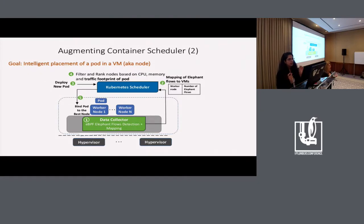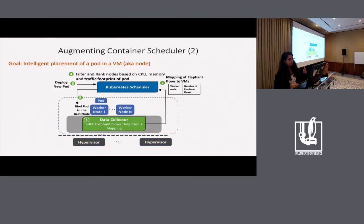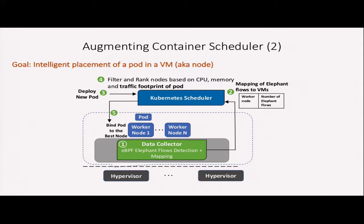The information relayed to the scheduler includes which worker nodes are running on a hypervisor and how many elephant flows there are per worker node. When a new pod gets deployed, the Kubernetes scheduler will filter and rank nodes based on CPU, memory, and traffic footprint of pods. If a pod has a light network footprint, the scheduler will try to place it on worker nodes away from those with heavy network footprint or more elephant flows.